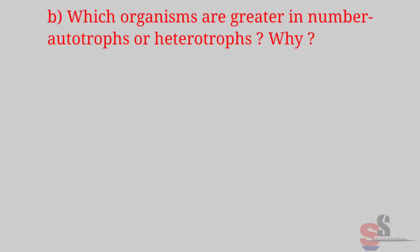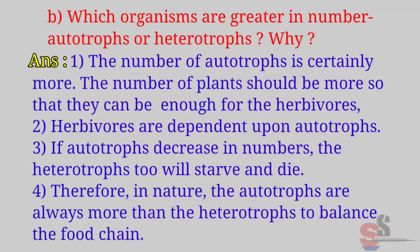B. Which organisms are greater in number — autotrophs or heterotrophs? Why? Answer: The number of autotrophs is certainly more. The number of plants should be more so that they can be enough for the herbivores. Herbivores are dependent upon autotrophs. If autotrophs decrease in numbers, the heterotrophs too will strive and die. Therefore, in nature, autotrophs are always more than heterotrophs to balance the food chain.